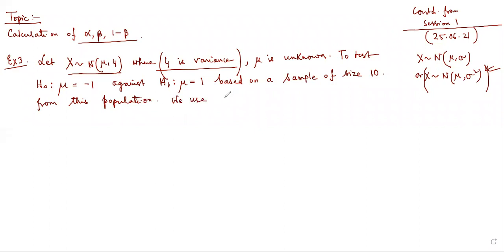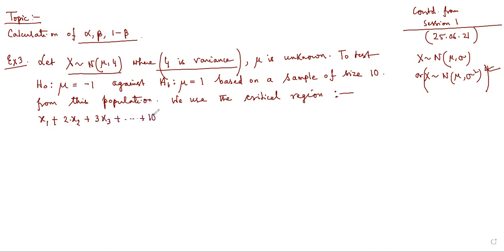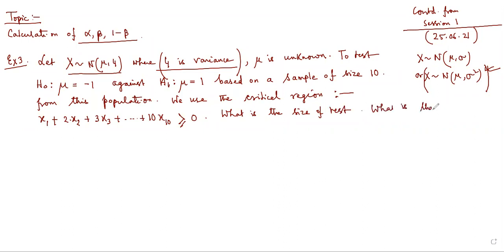We use the critical region: X₁ + 2X₂ + 3X₃ + ... + 10X₁₀ ≥ 0. The questions are: what is the size of the test, and what is the power of the test?